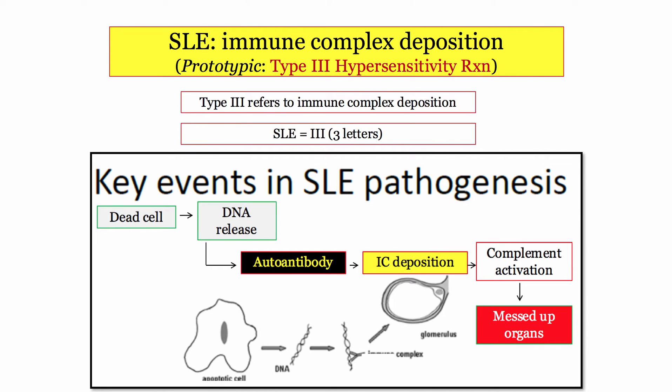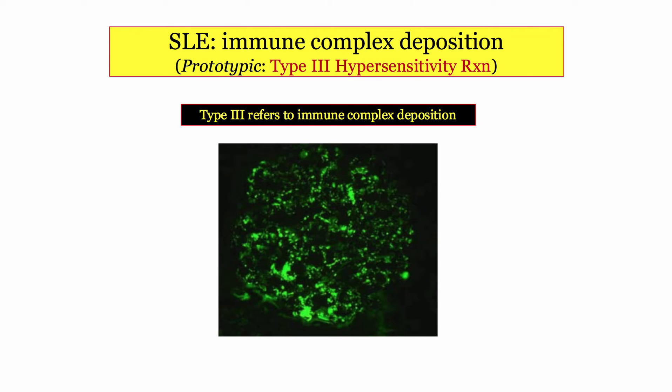Let's explore where those immune complexes come from. This graphic, shared by a colleague in rheumatology, is one of the most straightforward slides you'll see during board preparation on pathogenesis. A cell dies, DNA is released, and an autoantibody is formed in a genetically susceptible individual — on the boards, that will be a young female. The anti-DNA immune complex then circulates until it is deposited in vulnerable organs, with the glomerulus being particularly vulnerable. Complement is then activated, resulting in inflammatory disease of the end organ.